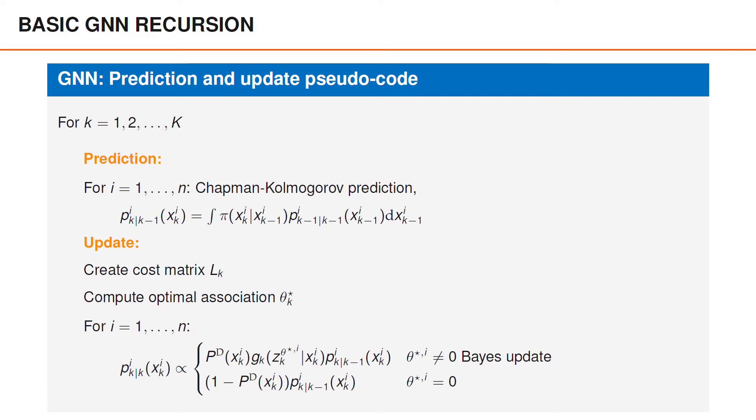So that's the basic GNN recursion. In each time step we start by predicting, then we compute the optimal association, and then we update.